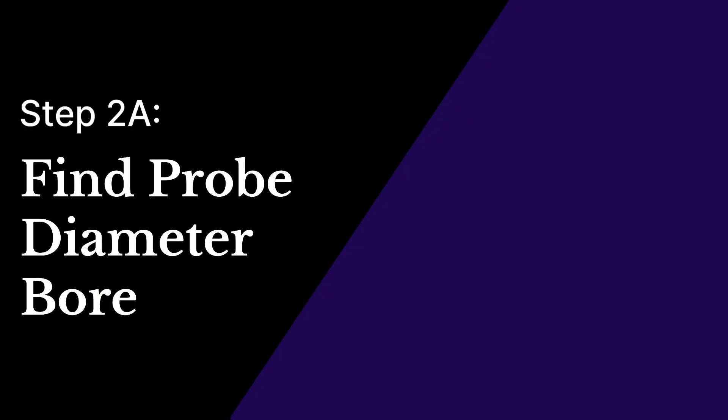Once you have centered the probe tip, we can move on to finding the effective probe tip diameter. Because the probe does not trigger immediately when touching a surface, this will be slightly different than if you were to just measure the probe tip diameter. For instance, on my machine, the probe tip measures just over two millimeters, but the effective probe tip diameter is 1.8 millimeters.